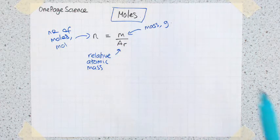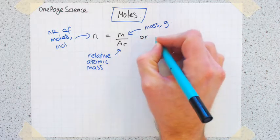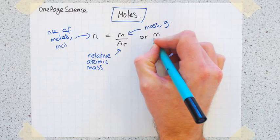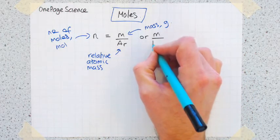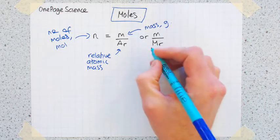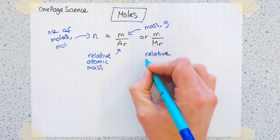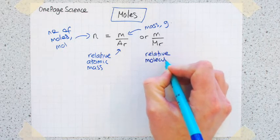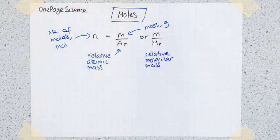There's a similar version of this. If you're dealing with atoms then you use the relative atomic mass. If you're dealing with compounds, it's basically the same equation, but instead of having relative atomic mass we have Mr, which is the relative molecular mass.